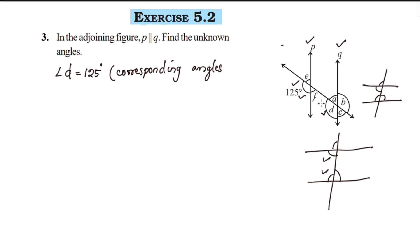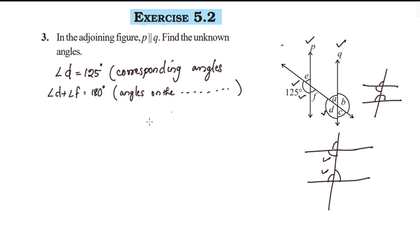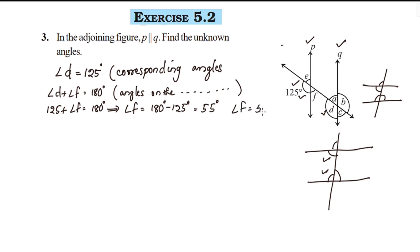Angle F is on the transversal. The sum of angle D and angle F is 180 degrees. The reason is: angles on the same side of the transversal are supplementary. So, angle D plus angle F equals 180 degrees. Angle D is 125, therefore angle F equals 180 minus 125, which is 55 degrees.